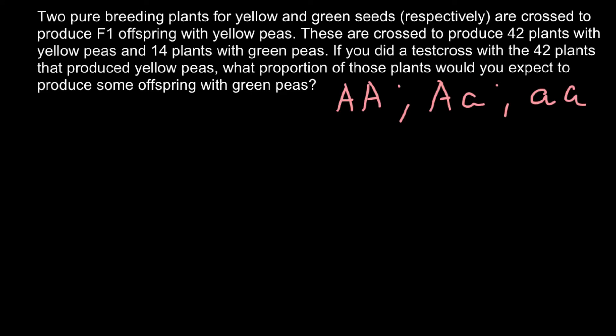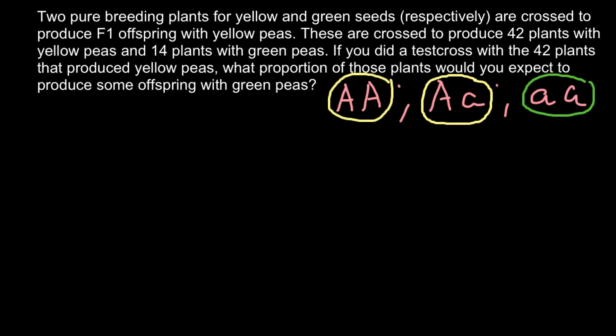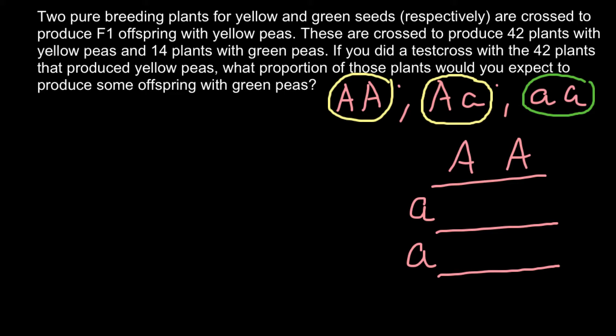Which color stands for which genotype? In the F1 offspring, all peas we see are yellow. That means homozygous dominant stands for the yellow color, and homozygous recessive stands for the green color. Heterozygous would be phenotypically yellow too. So in our first step, we crossed homozygous dominant with homozygous recessive, and all offspring were heterozygous.